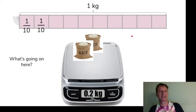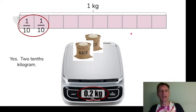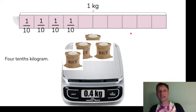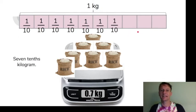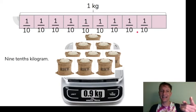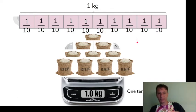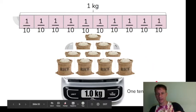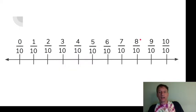Two tenths kilogram — fraction form, decimal form, same value. Three tenths, four tenths, five tenths, six tenths, seven tenths, eight tenths, nine tenths — and again, ten tenths or one kilogram. So: one tenth in word form equals one tenth in fraction form equals 0.1 in decimal form. Those are equivalencies — one tenth equals one tenth equals one tenth.